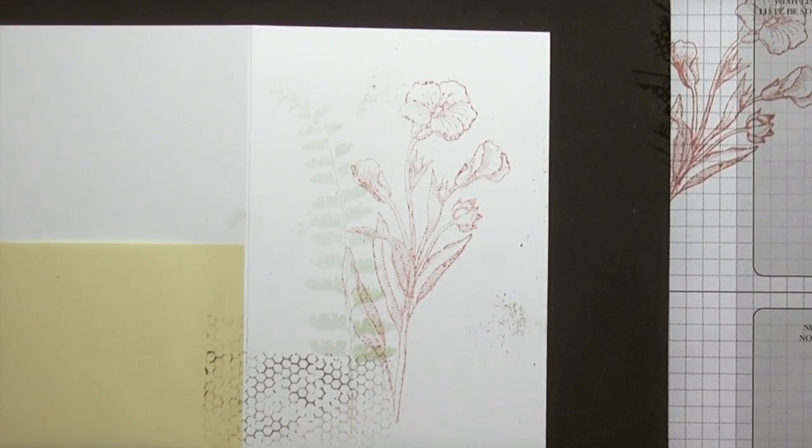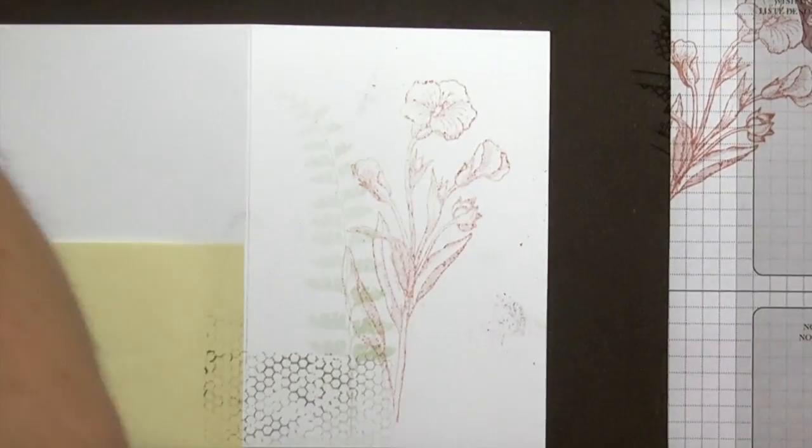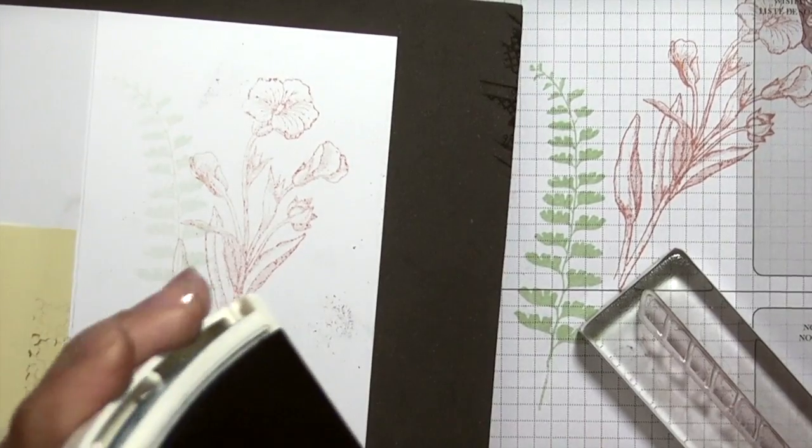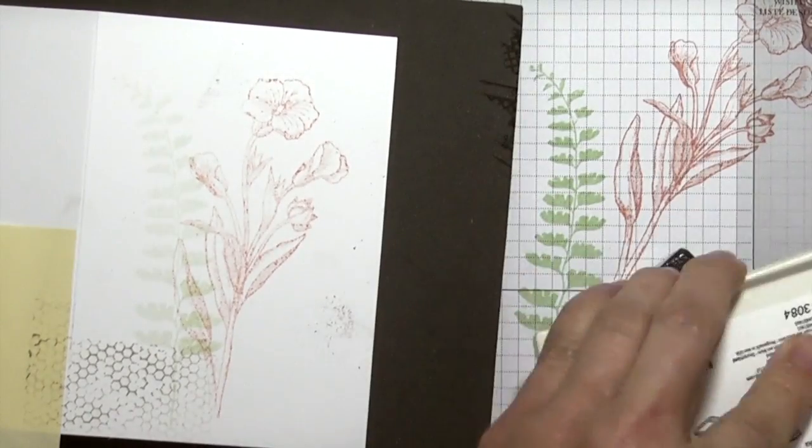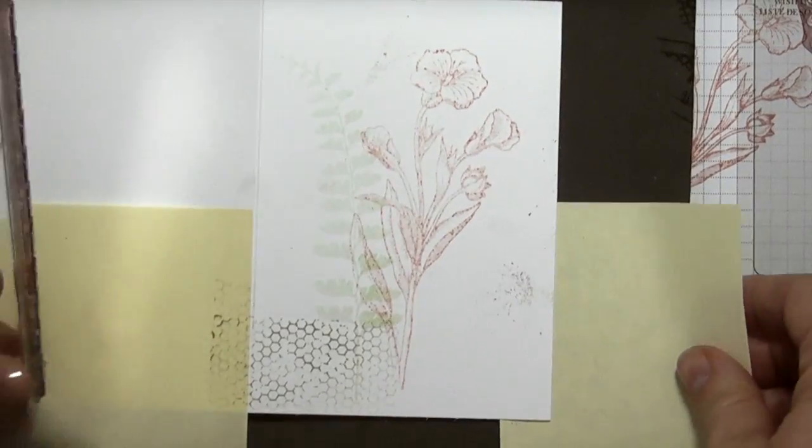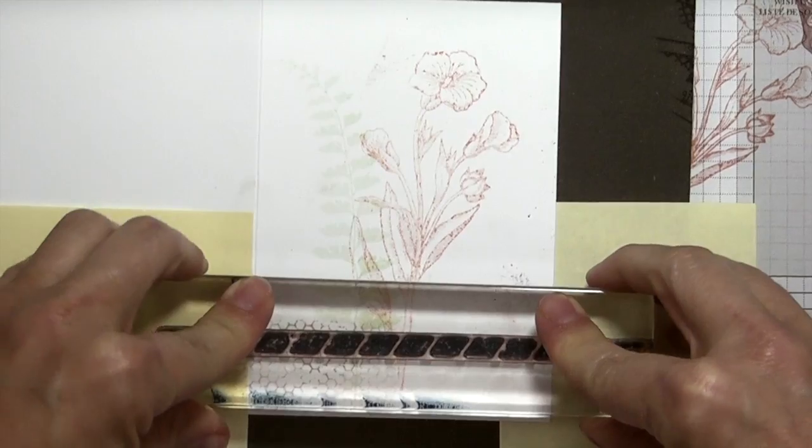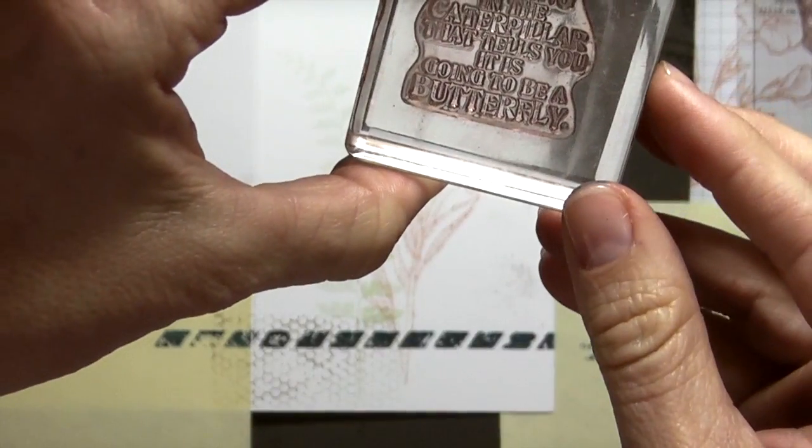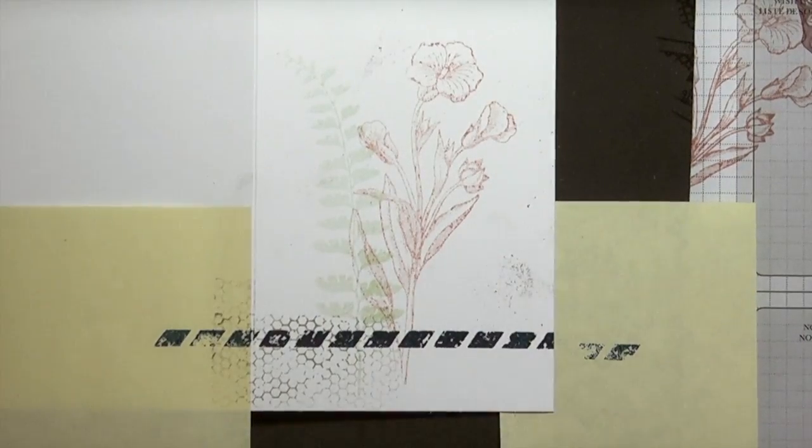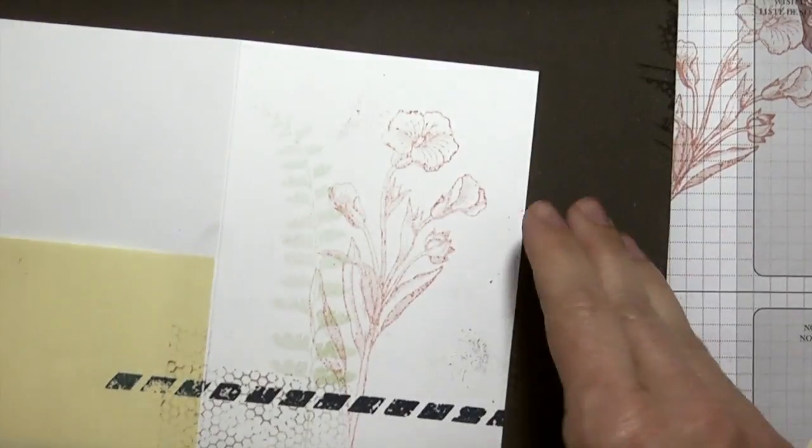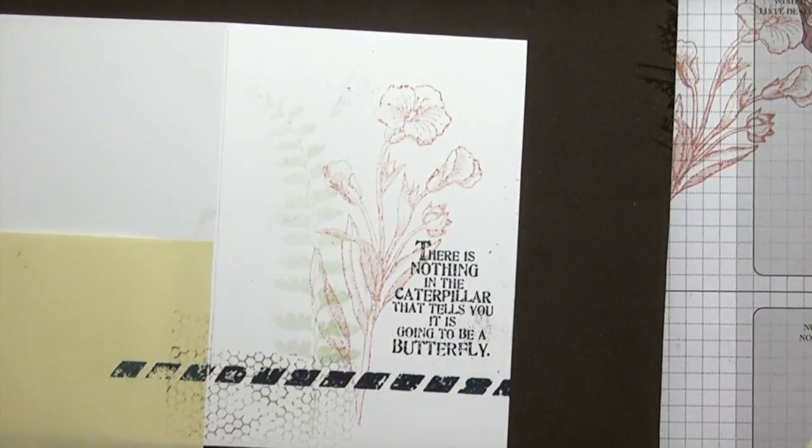Now I'm going to use this image right here. I'm going to have that go across in island indigo. I'm just going to kind of go down right here. Then I'm going to do the sentiment 'there is nothing in the caterpillar that tells you it is going to be a butterfly.' I'm going to do that over here in island indigo as well, and I'm not stamping off on this one either.